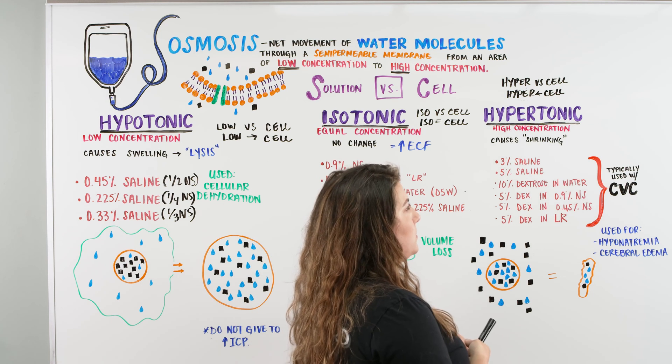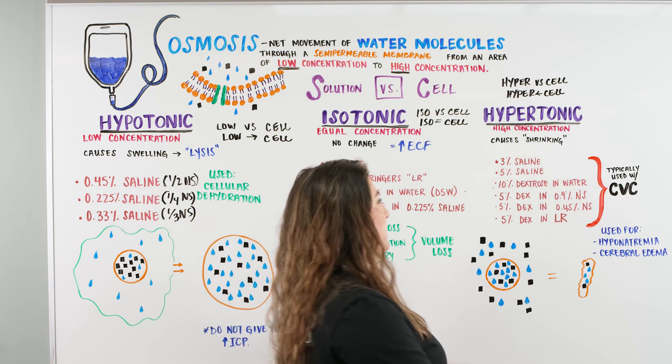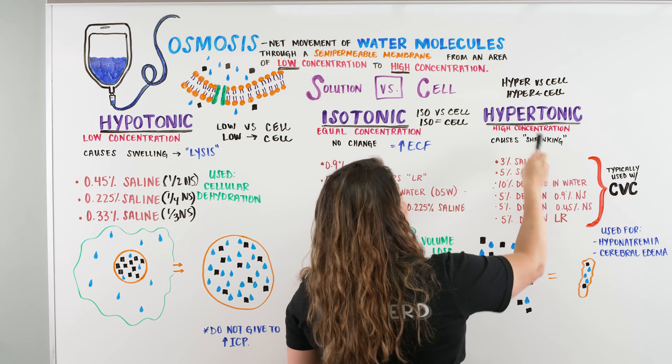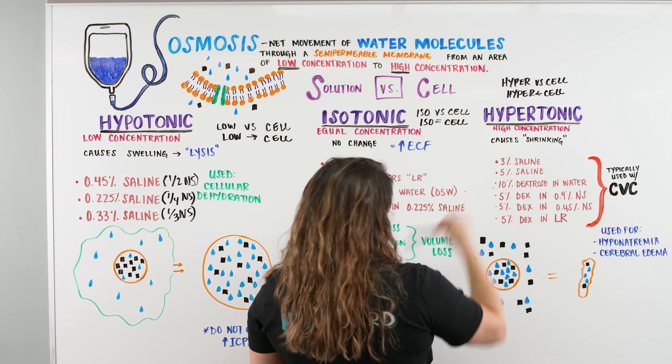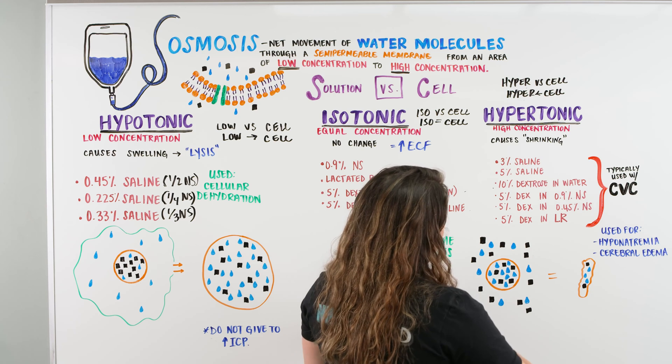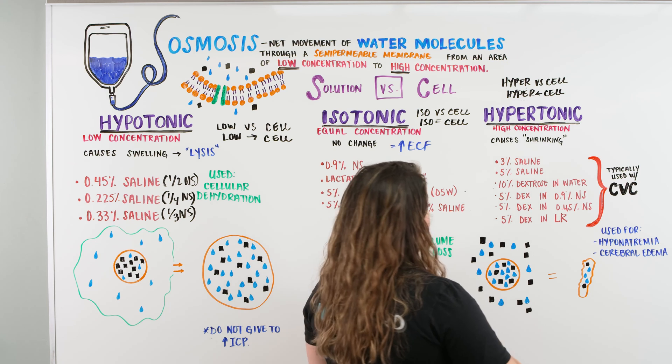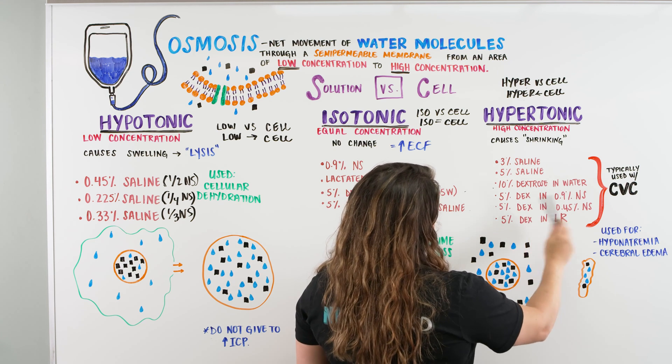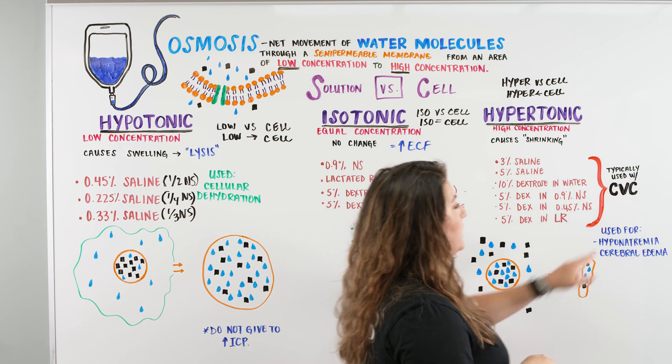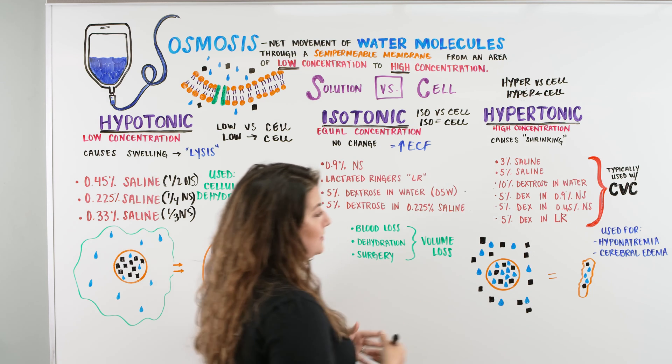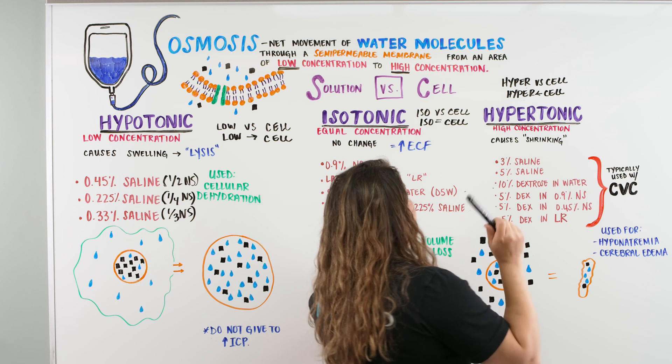What are some of our hypertonic solutions or fluids that we can give? We can give our 3%, 5% saline. We have our 10% dextrose in water, our 5% dextrose in our 0.5% normal saline, our 5% dextrose in our 0.45% normal saline, or 5 dex in half normal saline, and then our 5% dex in LR. All of these typically should be given with a central venous catheter. There are outstanding circumstances that maybe you want to get it in quicker and that's not readily available, but they can cause some issues with the patient.